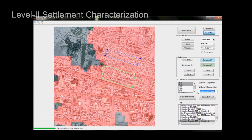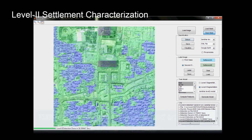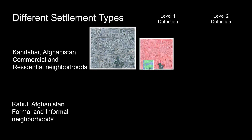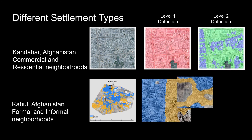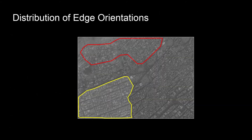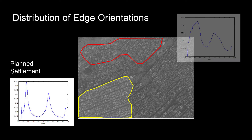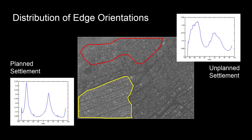Once settlements are identified, they are put through a second level of processing. At level two, settlements are divided into neighborhoods and characterized. Distinctions are made among residential, commercial, and industrial areas, and residential areas are broken into neighborhood classifications such as high, middle, and low socioeconomic. The key to the identification of these areas is deciphering the orientation of edges. Orthogonal edge patterns denote formal or planned housing areas, as opposed to the less structured appearance of informal housing areas.